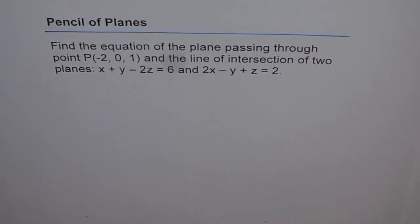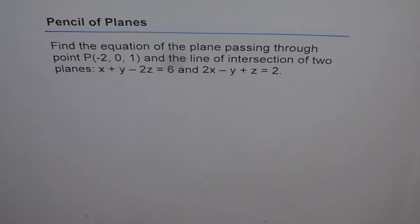Pencil of planes. Find the equation of plane passing through point P(-2, 0, 1) and the line of intersection of two planes: x plus y minus 2z equals 6 and 2x minus y plus z equals 2.